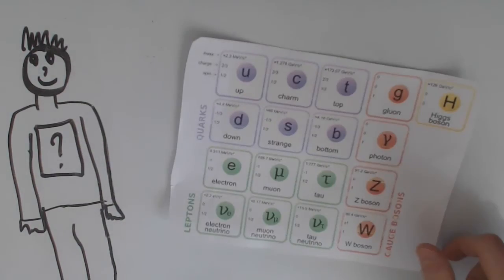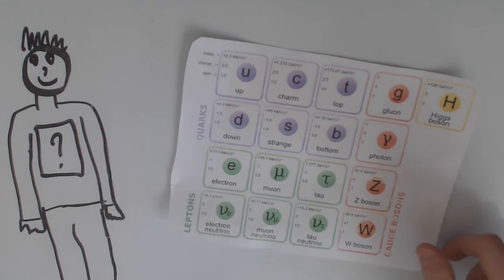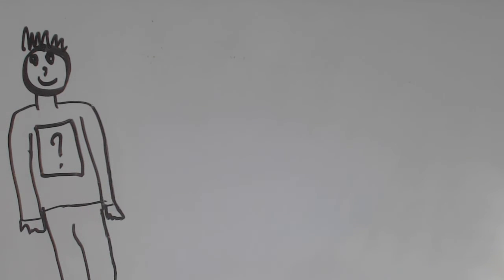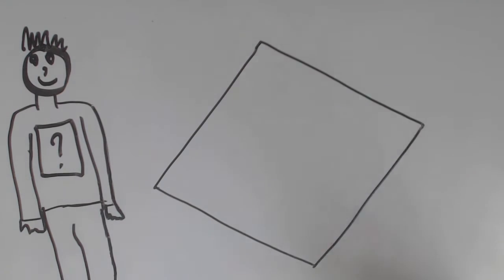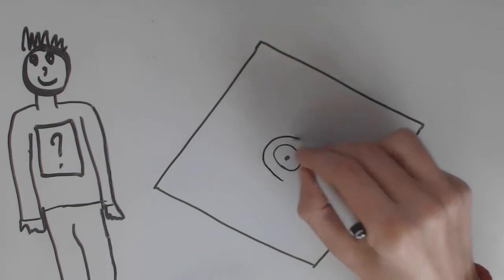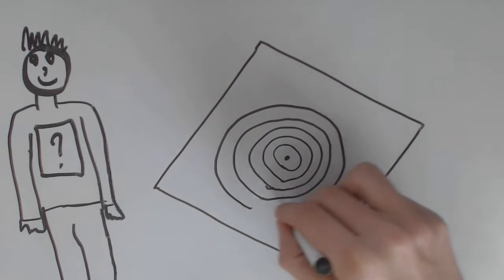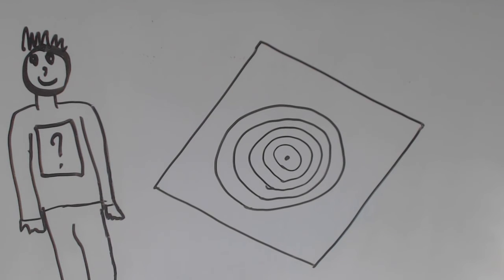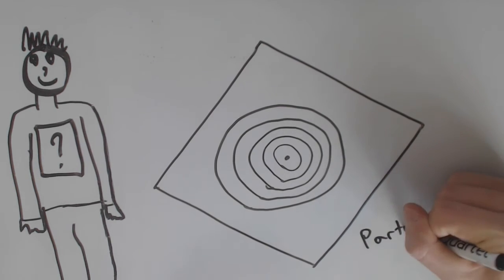There is supposedly a field for each particle in the standard model. A particle would be an excitation in its corresponding field. This theory is way easier to understand in two dimensions. Say a field is a flat plane. A particle would be a vibration of a point in the field.